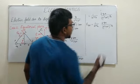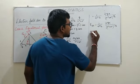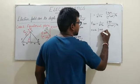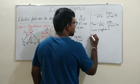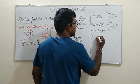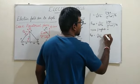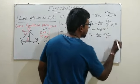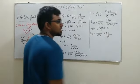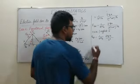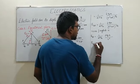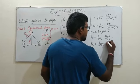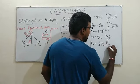Since r is comparatively greater than a, we can neglect a. Neglecting a, the total electric field becomes (1/4πε₀) · 2qa / r³. Since 2qa is the electric dipole moment p, the total electric field experienced on the equatorial plane equals (1/4πε₀) · p/r³.